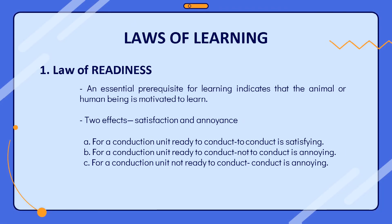The law of readiness means the organism is ready to respond or act, which is the most essential prerequisite for learning. This indicates that the animal or human being is motivated to learn. This condition of readiness has two effects: satisfaction and annoyance. When the animal is ready to act and is permitted, it gives pleasure; if it is not permitted, it feels annoyed. This law can also be observed in a classroom, which requires students' attention and readiness to learn to be satisfied.